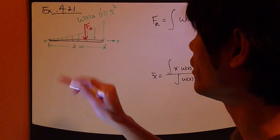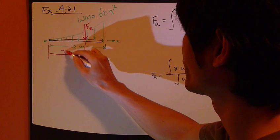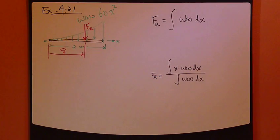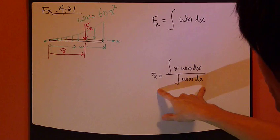Find this Fr magnitude as well as where it is applied, x bar. So Fr is the definition of this, x bar given as this.